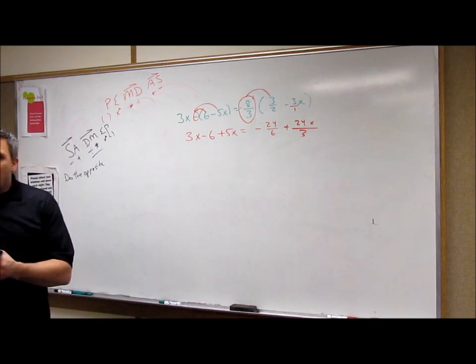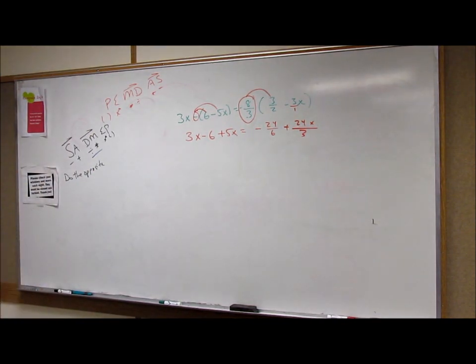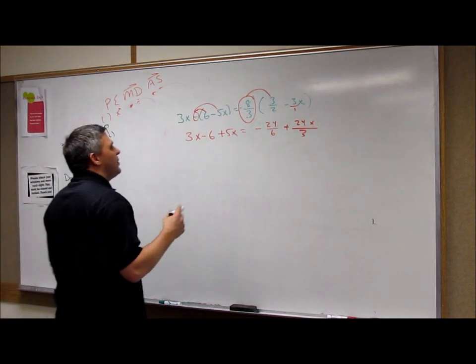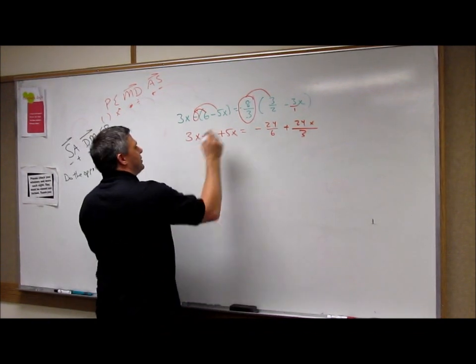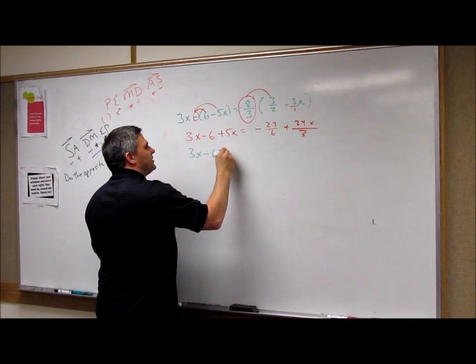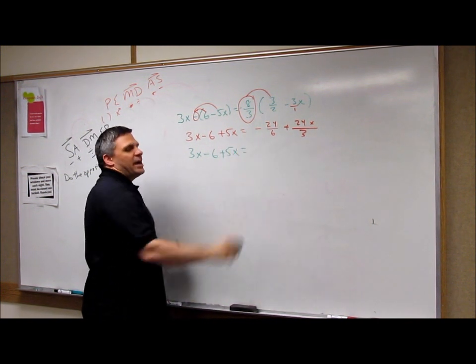And then I have, remember, that's over 1. So a negative times a negative is a positive. So 8 times 3 is 24x over 3 times 1, which is 3.